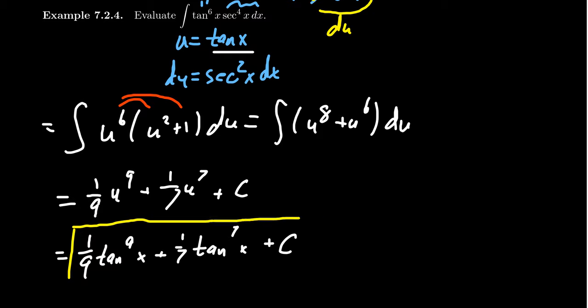And so I want you to mimic this strategy on future examples. If you're trying to integrate a product of tangent and secant, and you have an even number of secants, take u to be tangent and du to be secant squared, and you should probably be just fine.